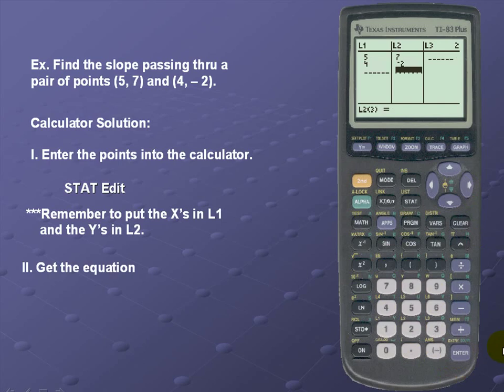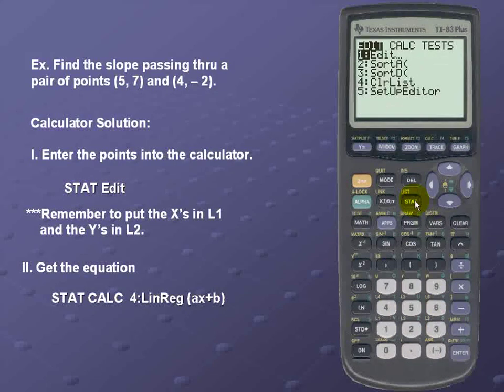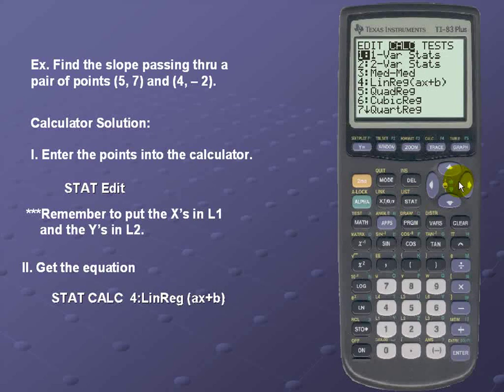Next we'll get the equation. In order to get the equation we'll simply re-enter the STAT menu. We'll scroll over to Calculate. We'll scroll down to the fourth option which is linear regression ax+b.